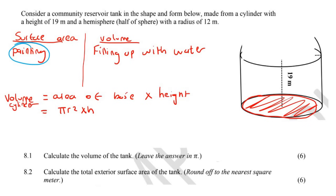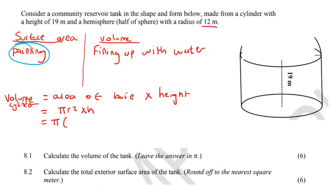So that is our cylinder that is now complete. Volume of cylinder: they said leave your answer as pi, so we won't change it to 3.14. Now we need the radius — this number here was 12. So the radius is 12 squared, and the height is 19. Don't round off, leave your answer with pi as they've asked us to do. So that'll be 2736π meters cubed.